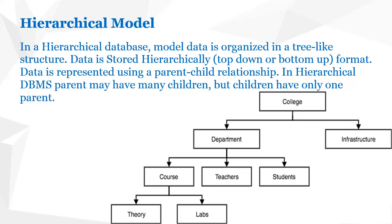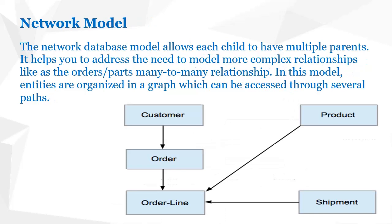Another is the network data model. The network model is similar to the hierarchical model, but in the hierarchical model there is a restriction: only upper-level to immediate lower-level relationships are allowed, making cross-level relationships indirect. In the network model, there is no such restriction — any entity can be related to any other entity.